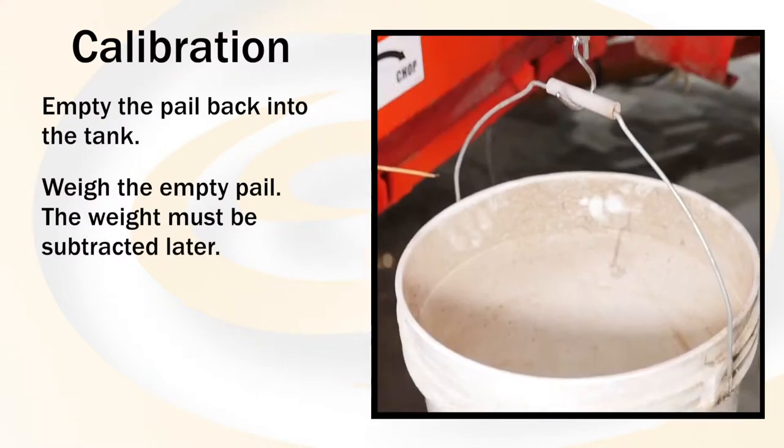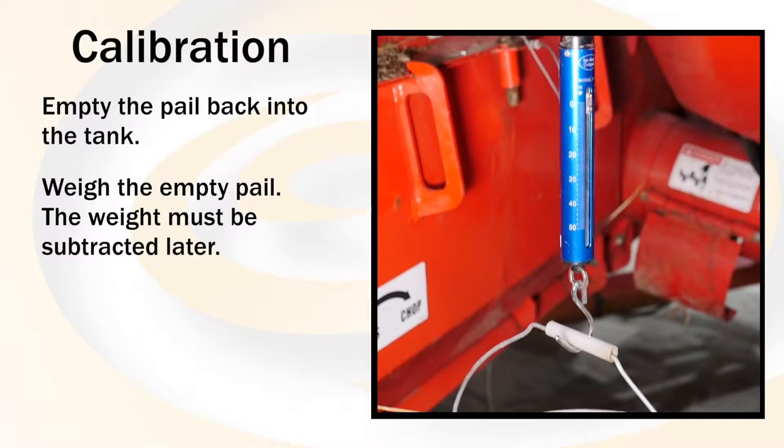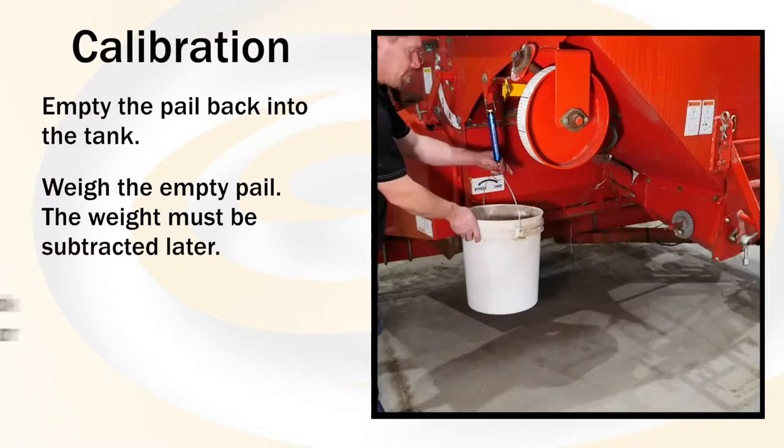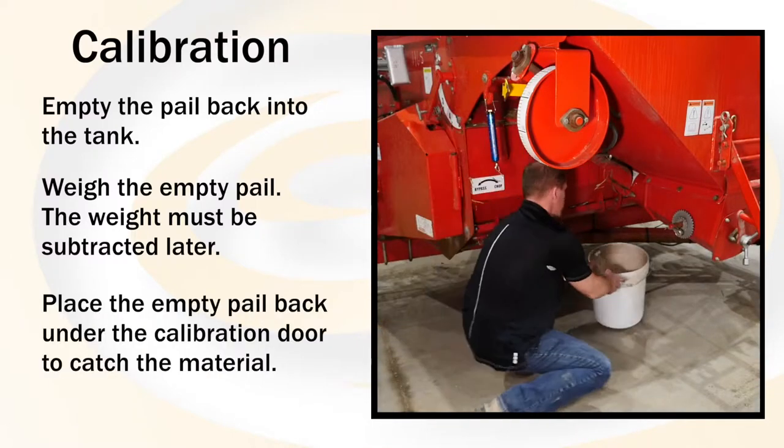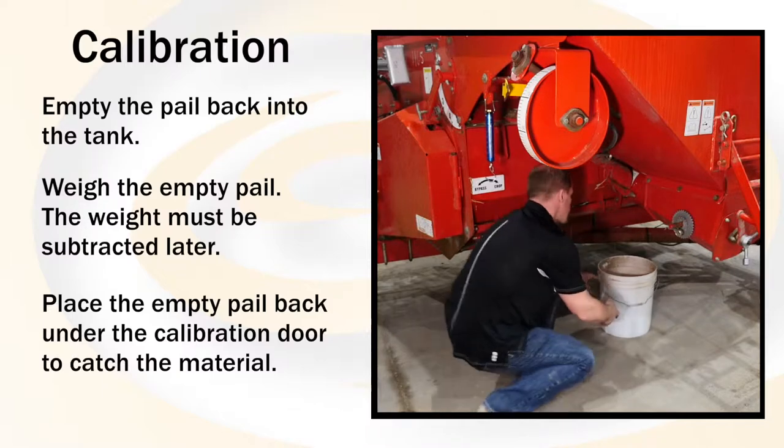Weigh the empty pail as the weight must be subtracted later. Place the empty pail under the calibration door so that the material will be caught.